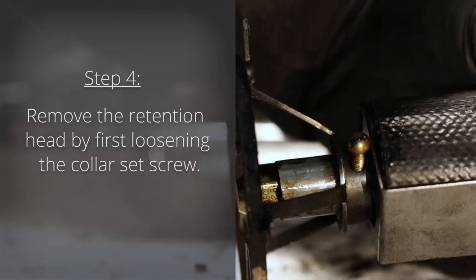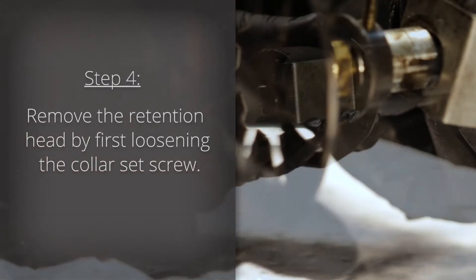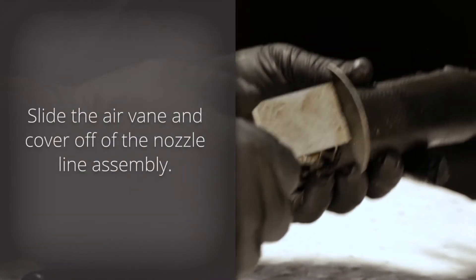Step 4. Remove the retention head by first loosening the collar set screw. Slide the air vane and cover off of the nozzle line assembly.